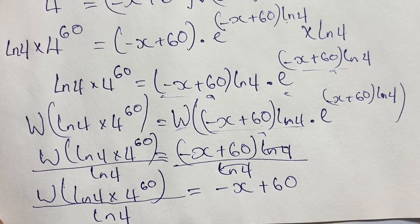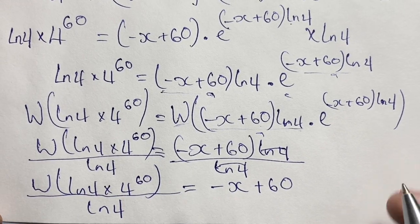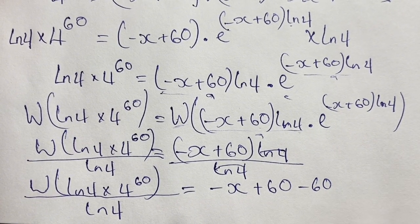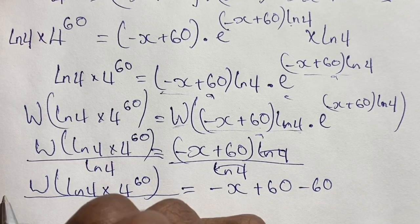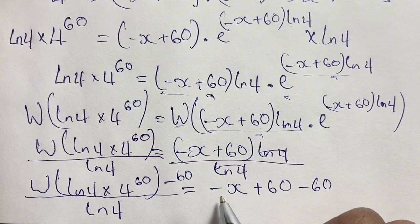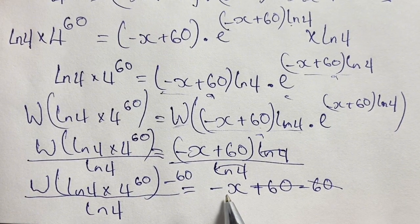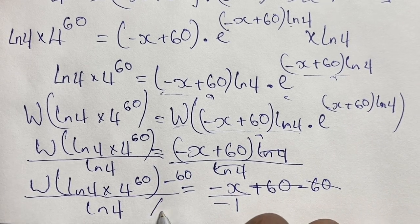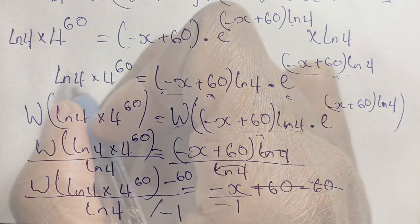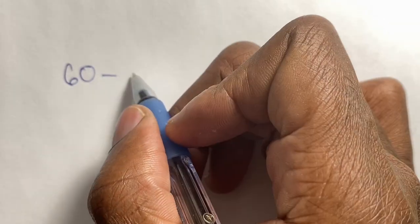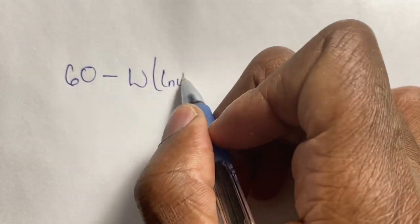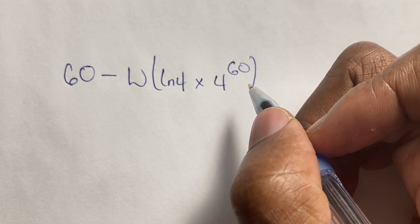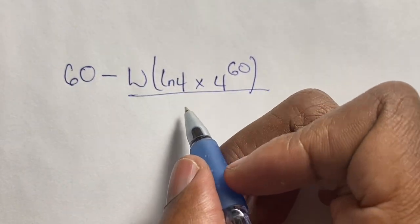We solve for x by subtracting 60 from both sides and then dividing by negative 1 to remove the negative sign. So x equals 60 minus W of ln 4 times 4 to the power of 60, all over ln 4.